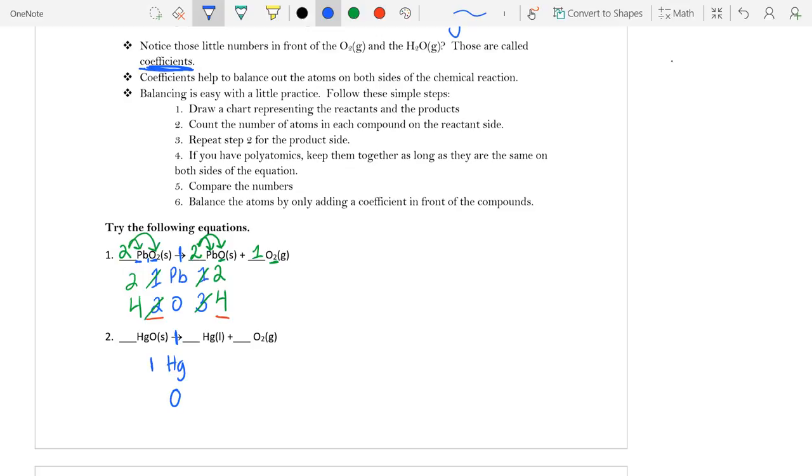Now, we need to count how many I have. I have one mercury and one oxygen. I have one mercury and two oxygens. Now, to balance out my oxygens because the mercuries are already balanced, I can put a two here because I know that two times one oxygen will give me two.